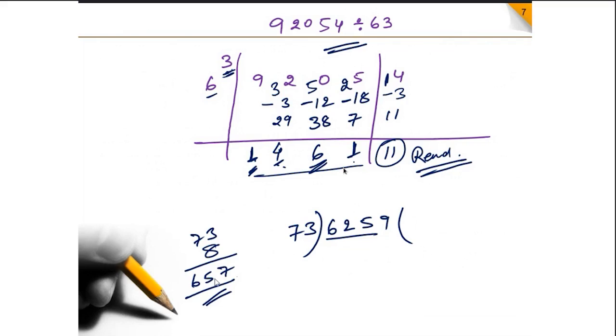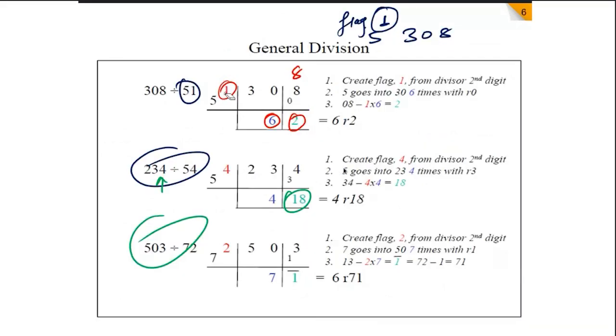In Vedic math, we are going to make the numbers very small. Like 73 will become a 7 and 3 will be the flag. So now, dividing with 7 is easy or 73 is easy? Now 6259 and this is outside. This will give us a remainder and this will give us a quotient. Let's understand the division first.